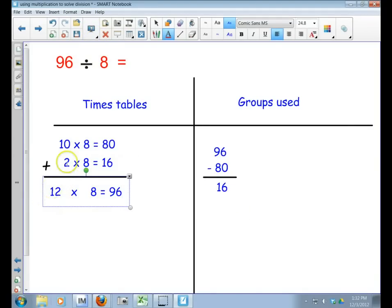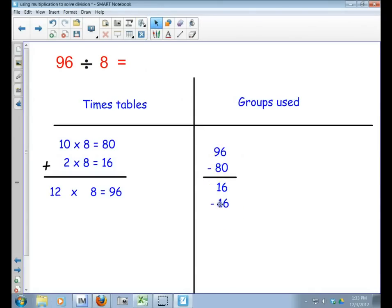So now I've got 2 times 8 equals 16, so I subtract 16. When I take 16 minus 16, I have zero, which tells me I have no remainders.